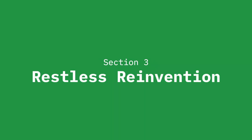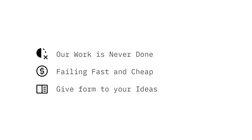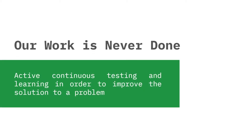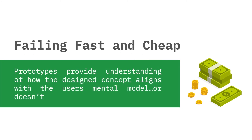In section 3 of this video, we will be looking into the second principle of enterprise design thinking: how our work is never done, failing fast and cheap, and giving form to your ideas. The term 'our work is never done' essentially says that active continuous testing and learning is key in order to improve the solution to a problem. Yesterday's horse-drawn carriage was a prototype for today's automobile, and today's automobile is just another prototype for tomorrow's transportation breakthrough. Prototypes provide understanding of how the design concept aligns with the user's mental model, or doesn't. Through feedback, changes can be made, and therefore failing early saves time and money.